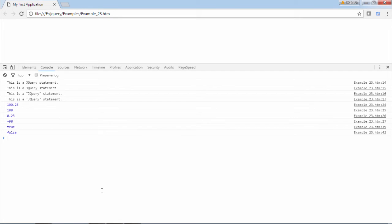Let's see the output. Here we can see this is plain statement, again this is plain statement. This statement has double quotes around jQuery, it has single quotes around jQuery. We have numbers printed, we have true and false printed.